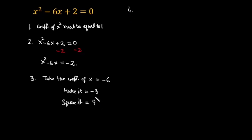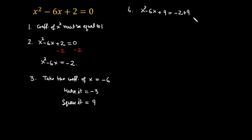Step number four: add it to both sides of the equation. So we get x squared minus 6x plus 9 equals minus 2 plus 9. This gives us a perfect square on the left side. We can factor it: x squared minus 3x minus 3x plus 9.